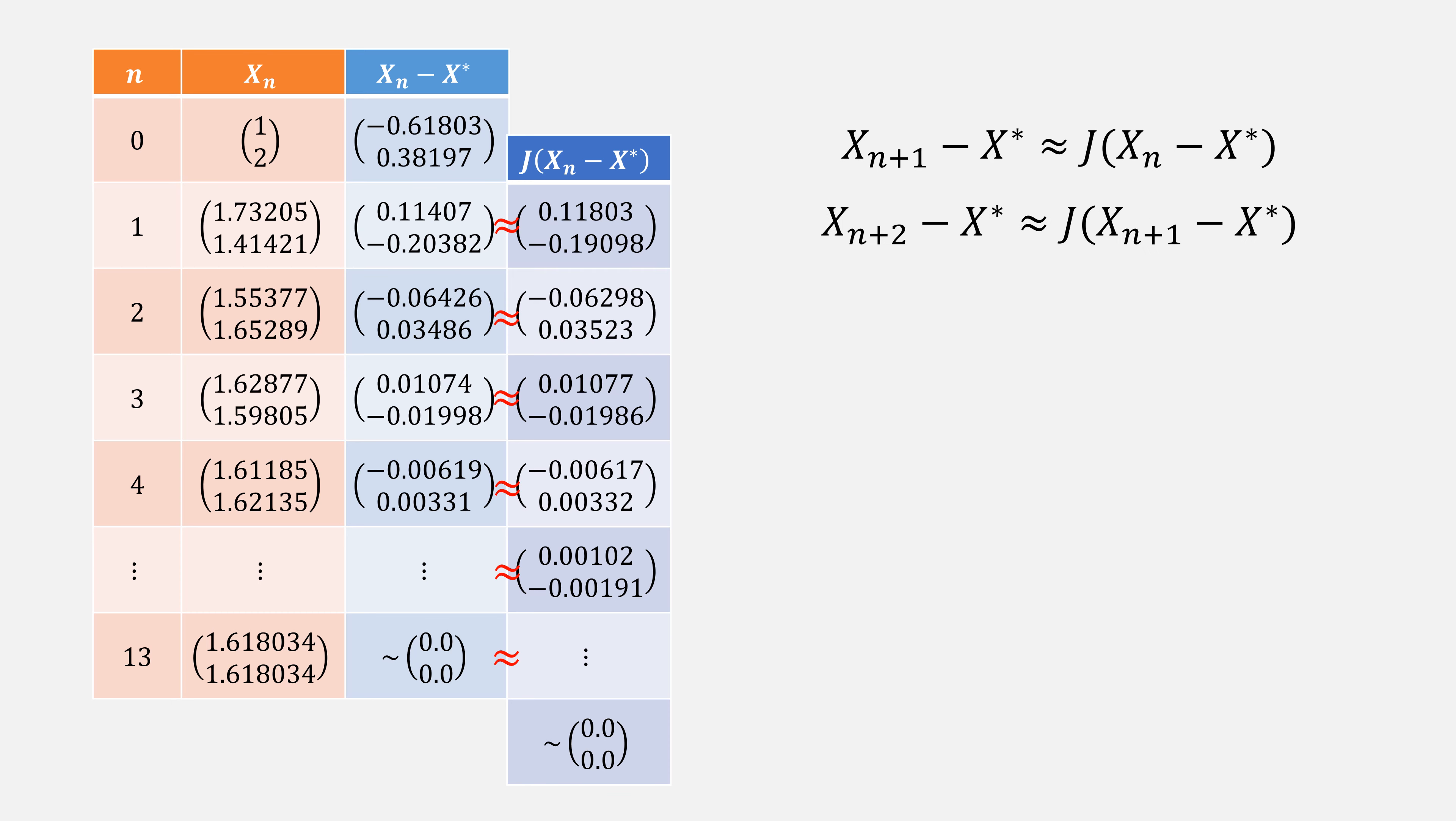Let's continue it to do one more iteration of this sequence, and then subtract the two equations. When we distribute j, we can simplify the equation to simply be x sub n plus 2 minus x sub n plus 1 is approximately the Jacobian times x sub n plus 1 minus x sub n.